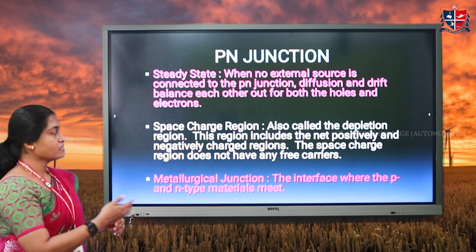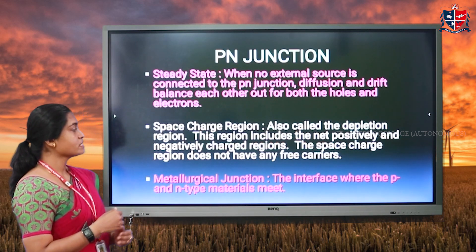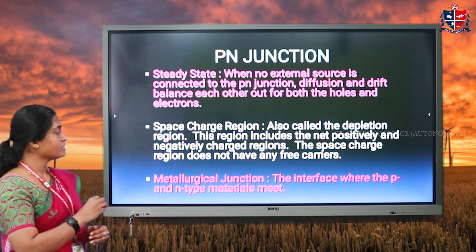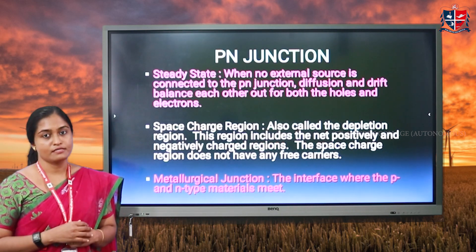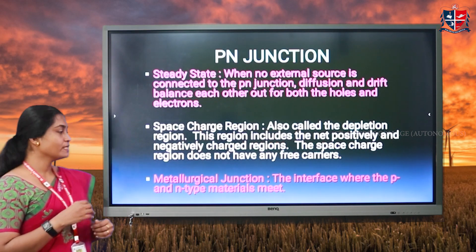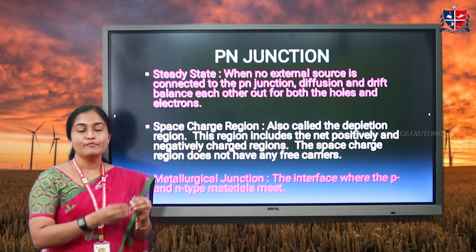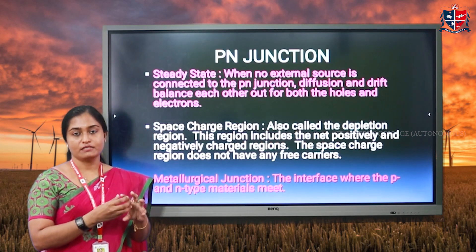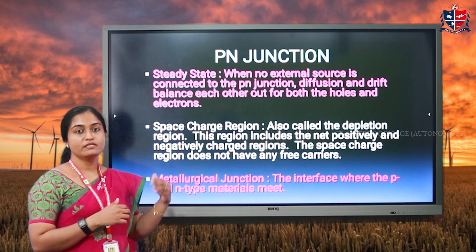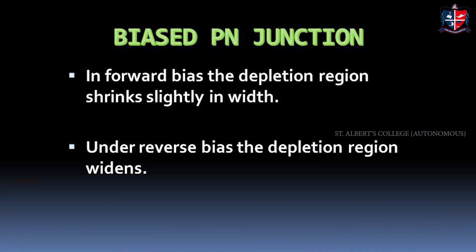The space charge region is also called the depletion region. This region includes the net positively and negatively charged regions, and the space charge region does not have any free carriers. The metallurgical region is the interface between the P-type and N-type regions — the region where the P-type and N-type materials meet is known as the metallurgical region. So, we can distinguish these states and regions in a PN junction diode.